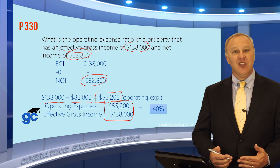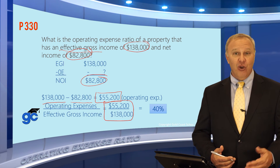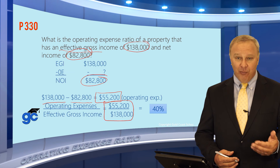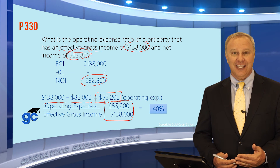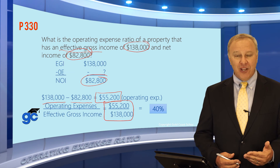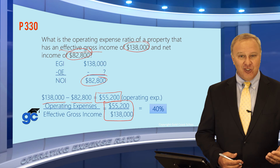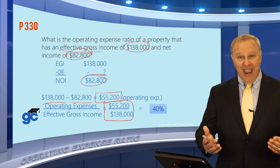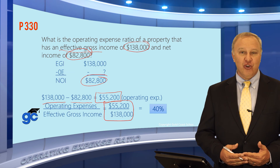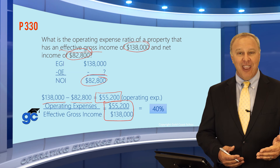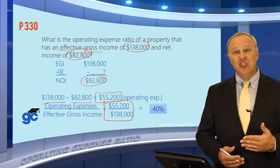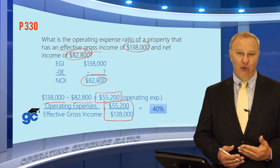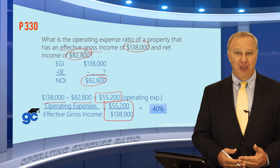What does that mean in realistic terms? Of our effective gross income — the income that we're actually receiving, not our potential but our effective or actual income — 40% is going to pay our operating expenses. Banks look at this to make sure that when they get to the debt service and mortgage payments, there's not so much going out in expenses that somebody could not afford the mortgage payment.